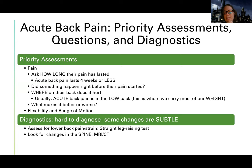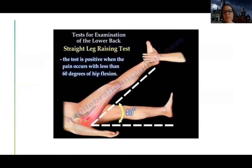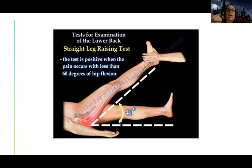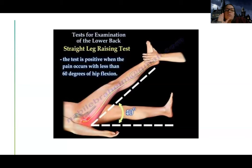We also perform a straight leg raising test. We raise the patient's leg up and then have them lower it down. If they feel a sharp or shooting pain in the lower back as they lower their foot when it's less than 60 degrees of flexion, it's usually a sign of nerve root irritation. This can indicate an acute problem or relate to degenerative disc disease — it's more a sign of a lower back problem in general.